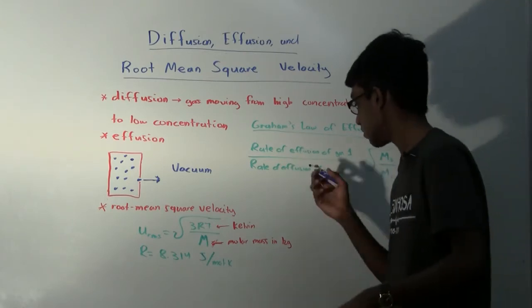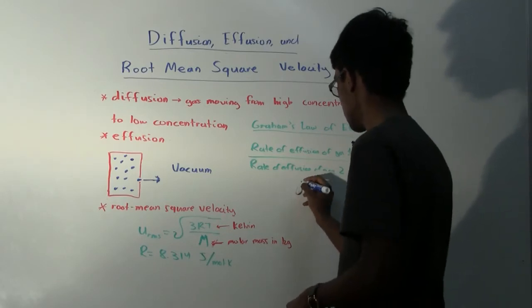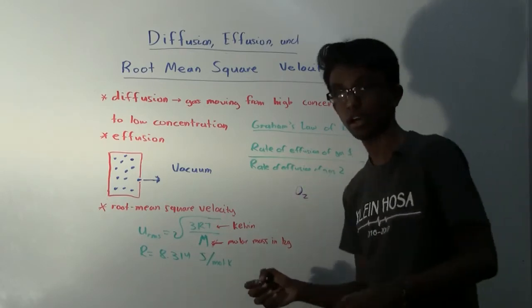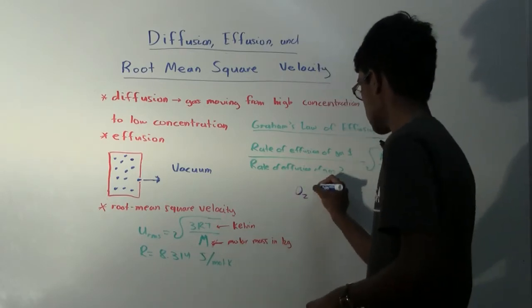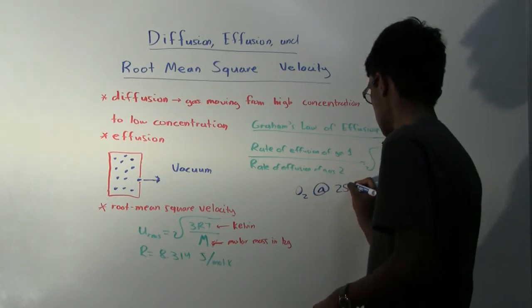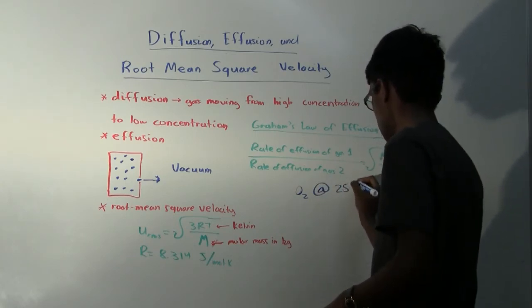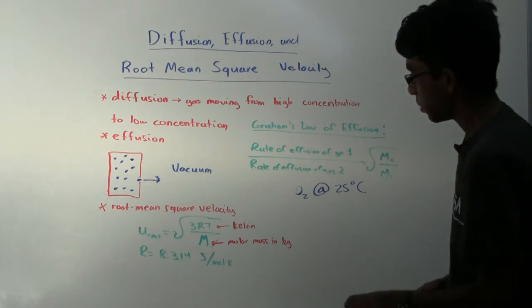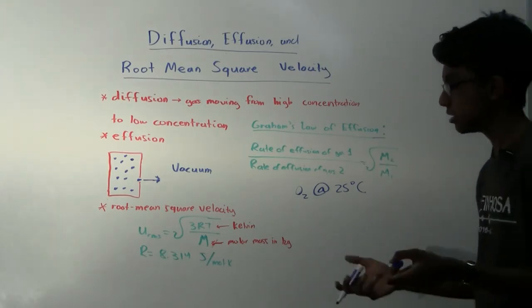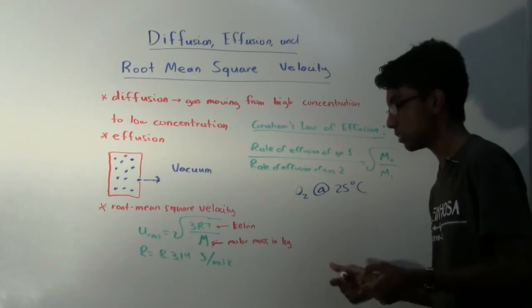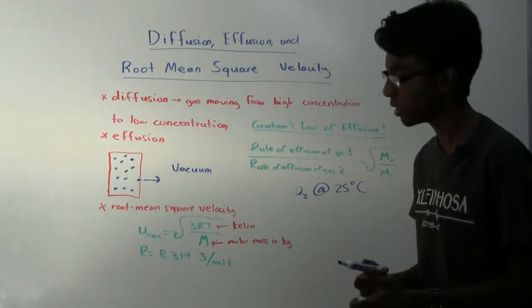So if you have a container of oxygen, let's say, and at 25 degrees Celsius, and we wanted to find the root mean squared velocity of this oxygen within this container, we're going to go ahead and use this equation.